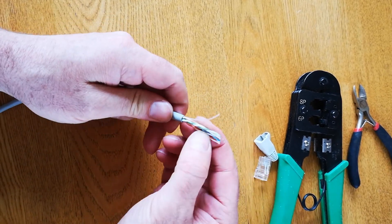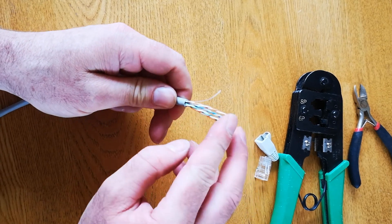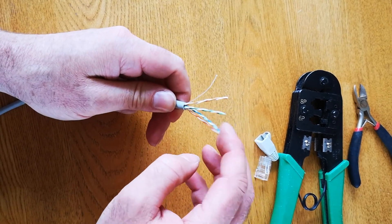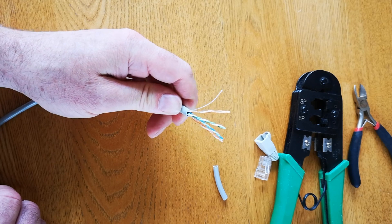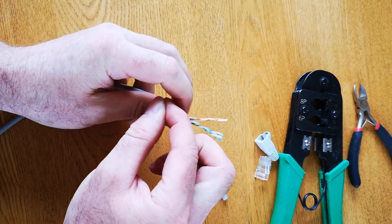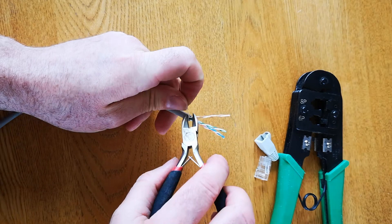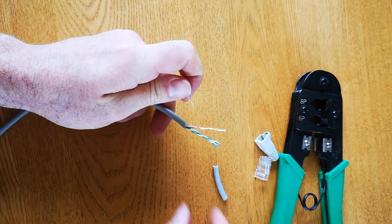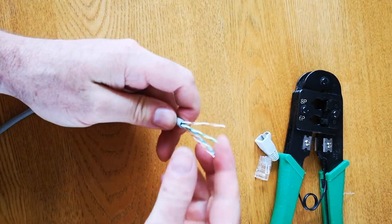And you can see we've got 4 sets of twisted paired cables inside. This extra one here is a piece of string, and this is used so you don't put strain on the cables when you pull them through conduit. So you can just cut that off with your side cutters.